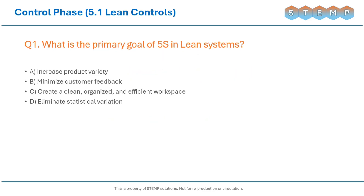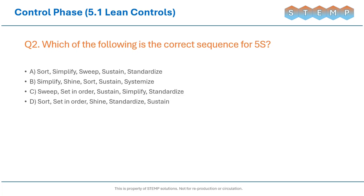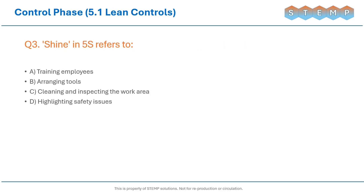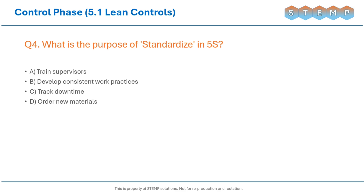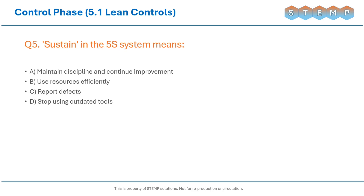What is the primary goal of 5S in lean systems? Which of the following is the correct sequence for 5S? Shine in 5S refers to? What is the purpose of Standardize in 5S? Sustain in the 5S system means?